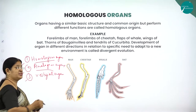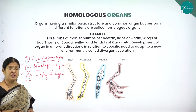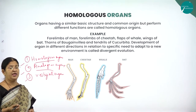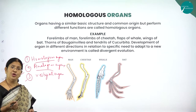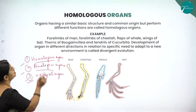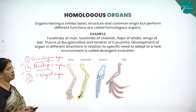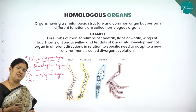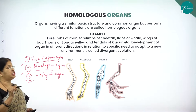Vestigial organs are organs which are present but are of no use. For example, the appendix in the human body is a vestigial organ — though it is present, it is of no use. So such organs are called vestigial organs. Now let us study about the first one: homologous organs are those organs which have a common origin but different function.